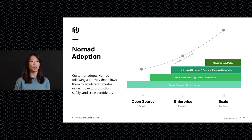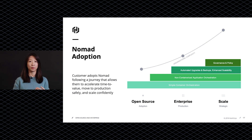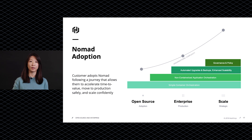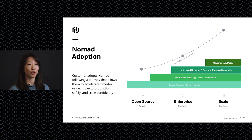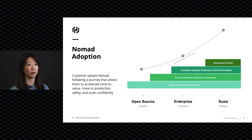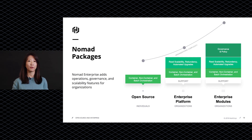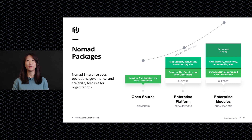A common pattern in the Nomad adoption journey is starting with containers, then moving to legacy workloads. As more workloads move into Nomad — especially into production — companies start adopting Nomad enterprise features to simplify operations and run their platform safely. As they scale and onboard more teams, they adopt governance and policy features for better control. On top of open source, HashiCorp provides enterprise platform and modules with different levels of support to help customers run their production environments more safely and efficiently.